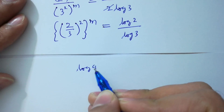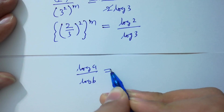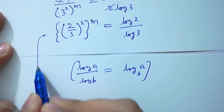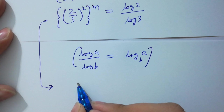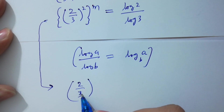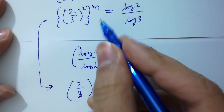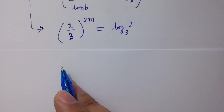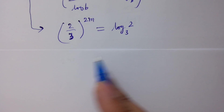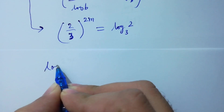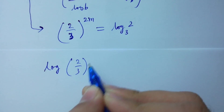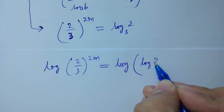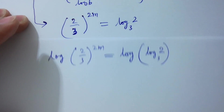Since log a over log b equal to log a to the base b, we have 2 over 3 to the power 2m equal to log 2 to the base 3. Now take log on both sides: log of 2 over 3 to the power 2m equal to log of log 2 to the base 3.